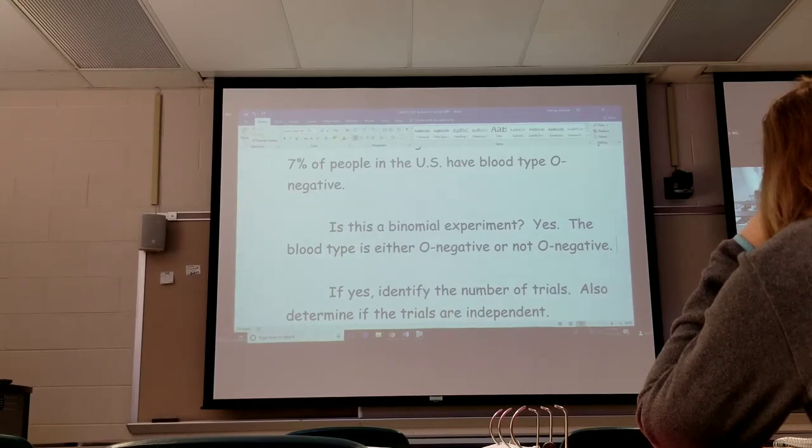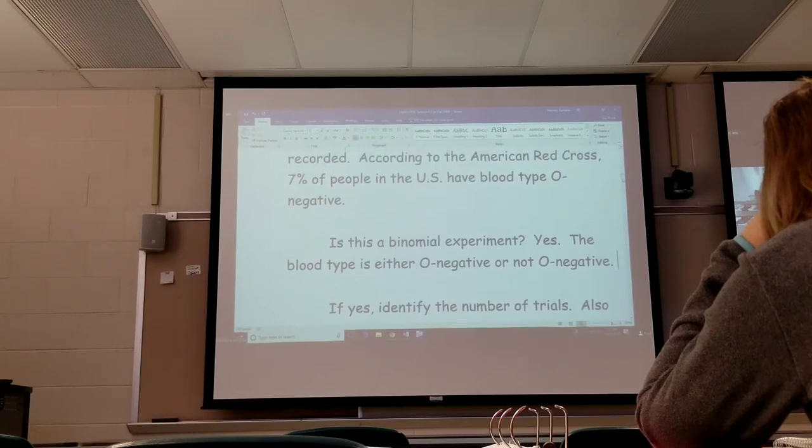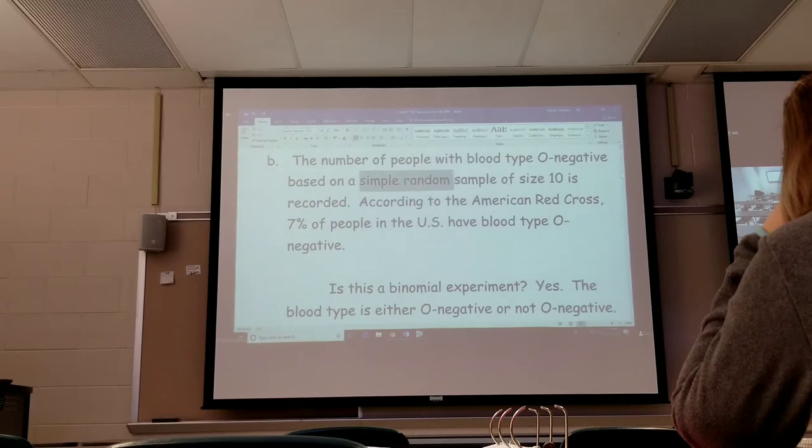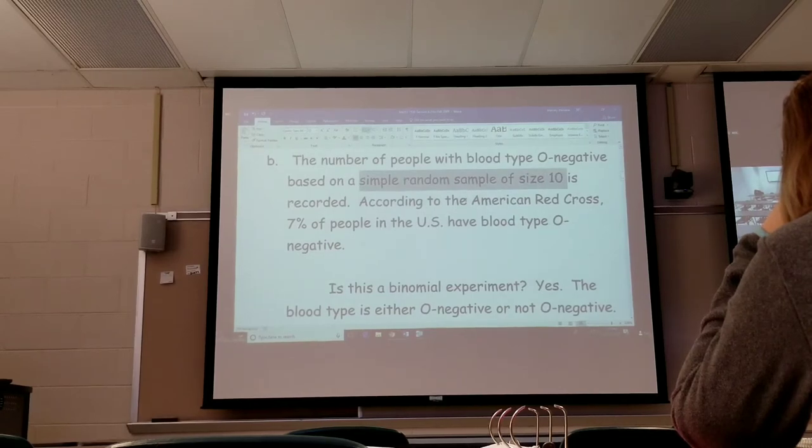If yes, identify the number of trials. That's the number of times you performed the experiment. It's typically called a simple random sample of n trials. They tested 10 people. That's your number of trials.